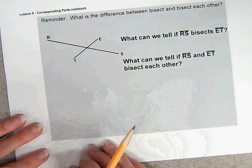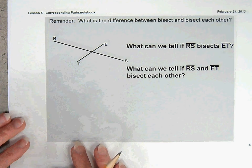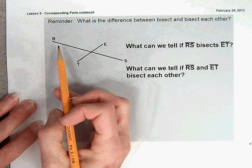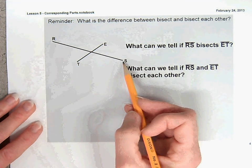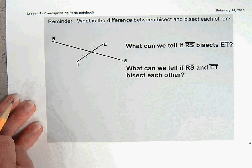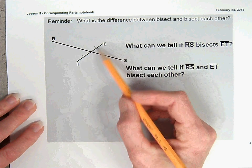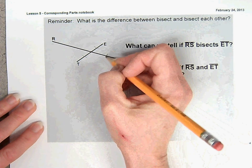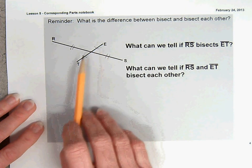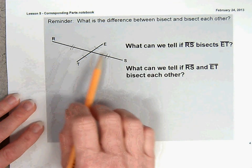Let's review for a minute what the difference is between bisecting something and two lines bisecting each other. Just because a line bisects one line doesn't mean they bisect each other. If segment RS bisects ET, then RS is doing the bisecting — it's the bisector of ET, so all we can say is that those two segments are congruent. Now, if RS and ET bisect each other, then not only does RS bisect ET, but ET also bisects RS, so we could say that these pairs of segments are each congruent. Note that these are congruent to each other in pairs — they are not all four congruent to each other. It just cuts each segment in half.